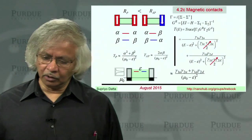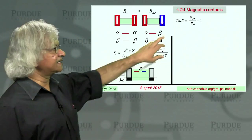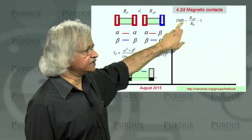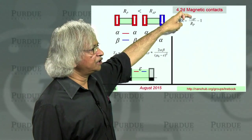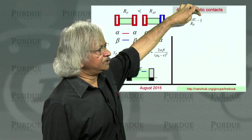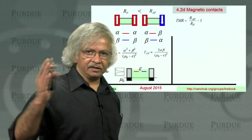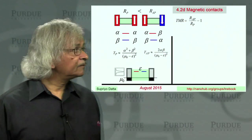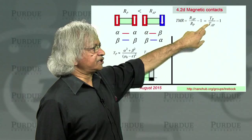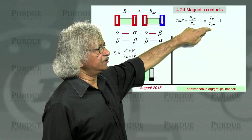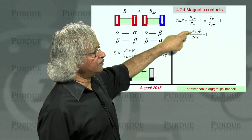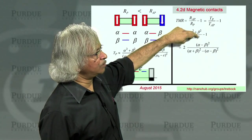Now, in devices, people define something called the tunneling magnetoresistance, such as for tunneling devices. They call it the tunneling magnetoresistance, TMR, and it's defined as the ratio of the anti-parallel to the parallel resistance, minus 1. Or you could think of it as the change in resistance, RAP minus RP divided by RP. So we can evaluate that by noting that resistance is inversely proportional to transmission. So RAP over RP is like TP over TAP. And if you put in the values we just calculated, you'd get that.